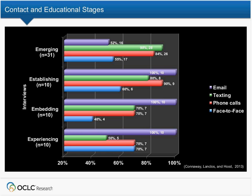In 2008, when we asked 'Greenagers' — 12- to 18-year-olds — about email, they were blunt: 'Email was for old people.' The students we're talking to now are much nicer to us. Face-to-face is still important — even people who text all the time will say, 'Sometimes it's nice to talk to someone, to see someone's face.' Texting is very important with the emerging and establishing stages, and becomes less important with researchers and scholars.